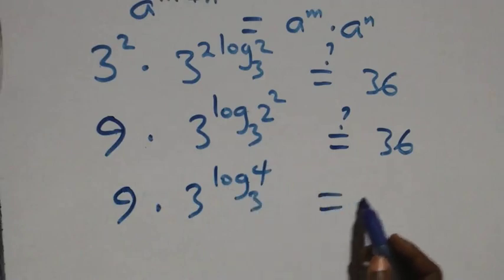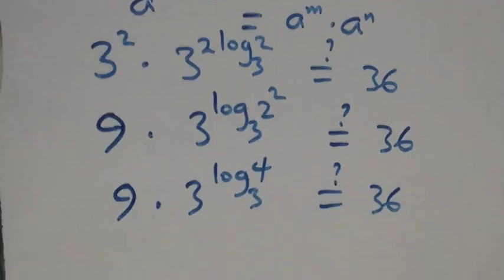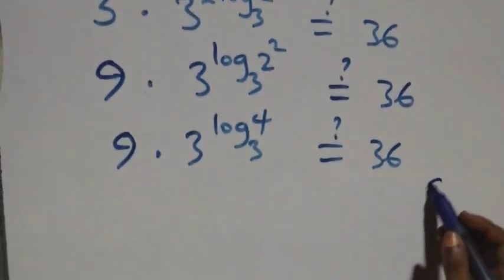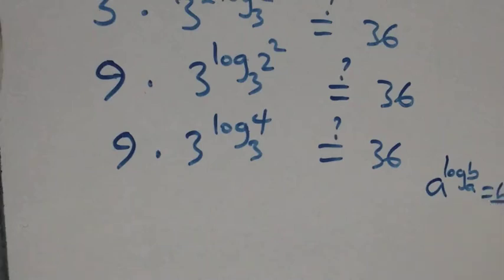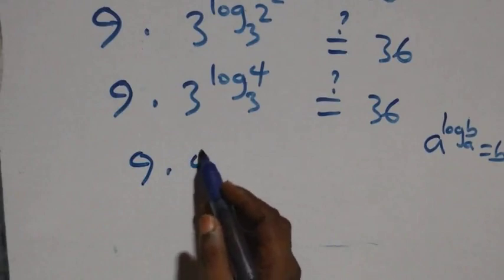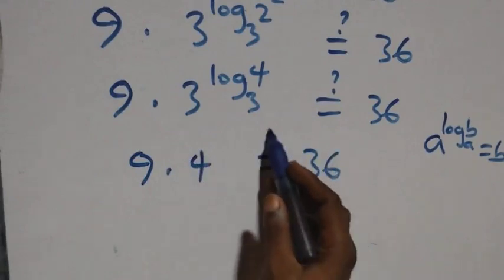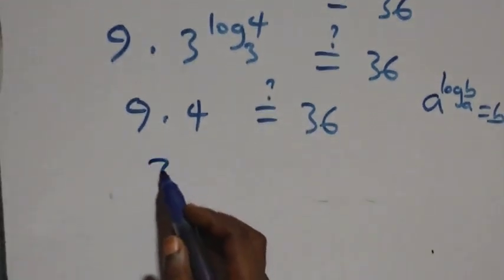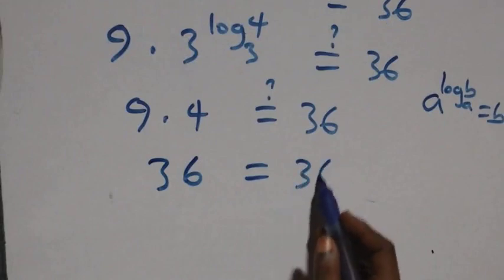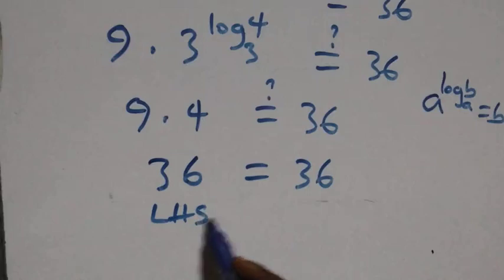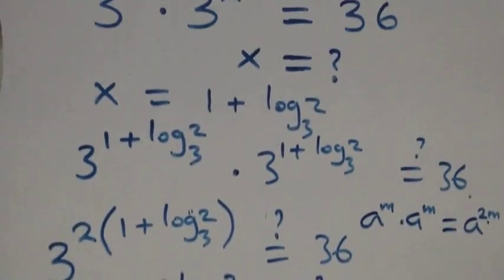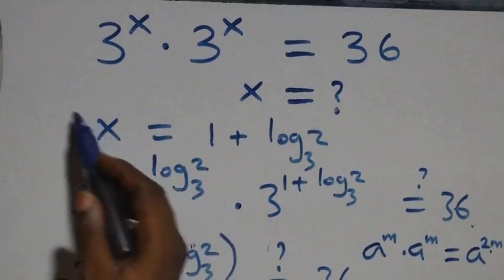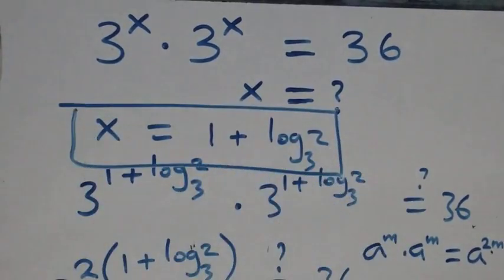We use the identity a raised to power log b to base a equals b. So 3 raised to power 2 log 2 base 3 equals 4. Therefore 9 times 4 equals 36, which equals the right-hand side. Hence we conclude that x equals 1 plus log 2 to base 3 satisfies this given problem. Thank you for watching.